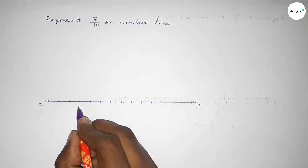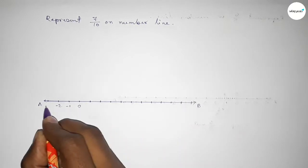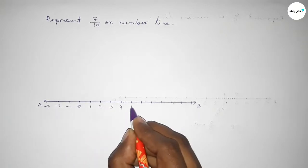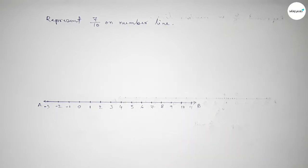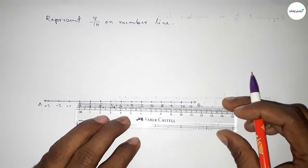So taking here starting number 0, this side minus 1, minus 2, minus 3, this side 1, 2, 3, 4, 5, 6, 7, 8, 9, 10, 11. Now we have to divide the distance between any two numbers into 10 equal parts.